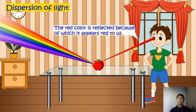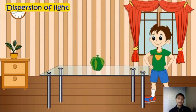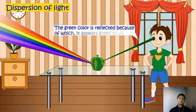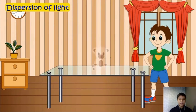The red color is reflected, because of which it appears red to us. The six colors are absorbed and only the red color is reflected. For example, with green, all the six colors are absorbed and the green color is reflected, because of which it appears green to us.